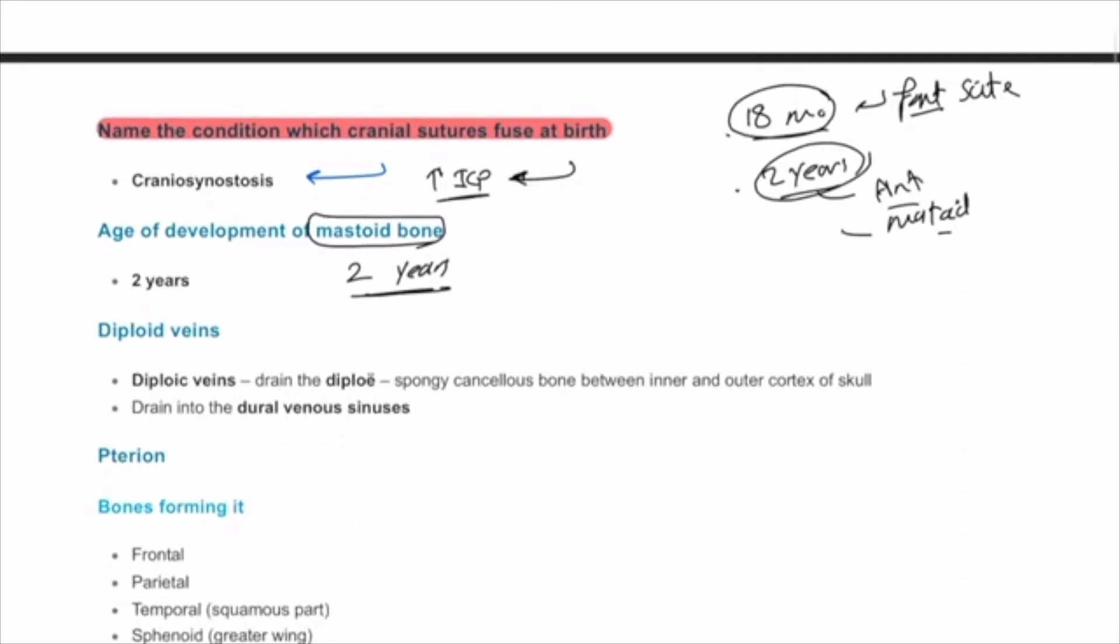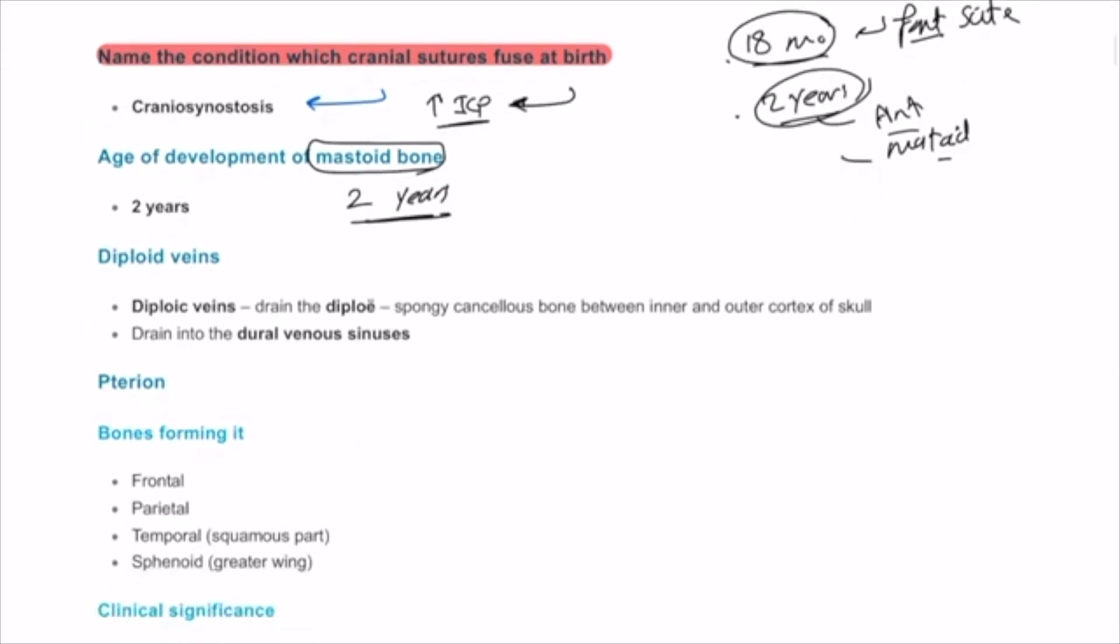Diploic veins are veins which drain the bone between the inner and outer cortex or inner and outer table of the skull. If we take a section of the skull, we'll find that there is an outer table and also an inner outer table as well.